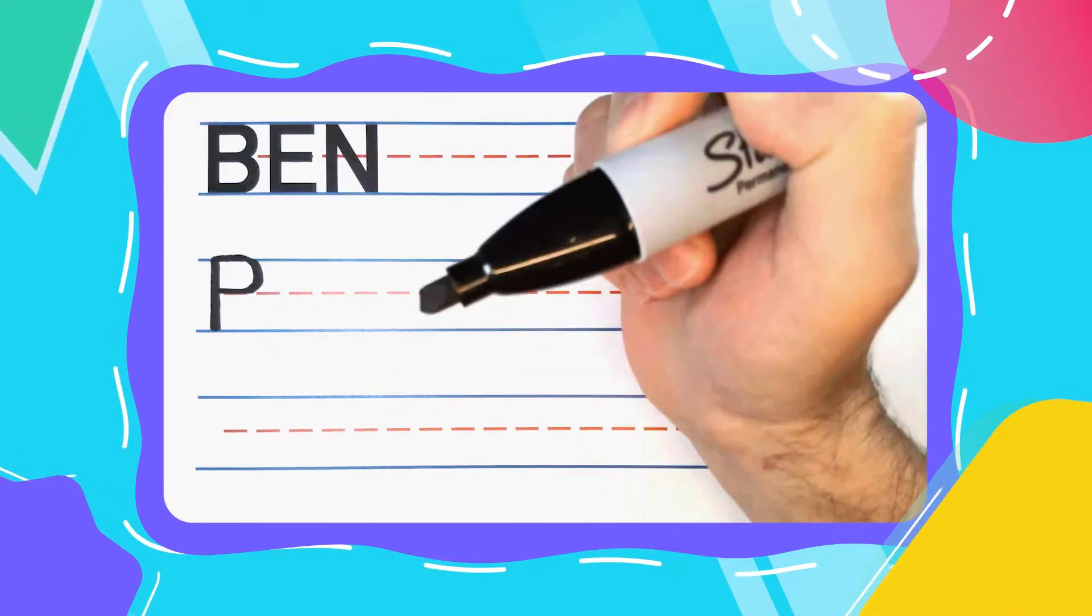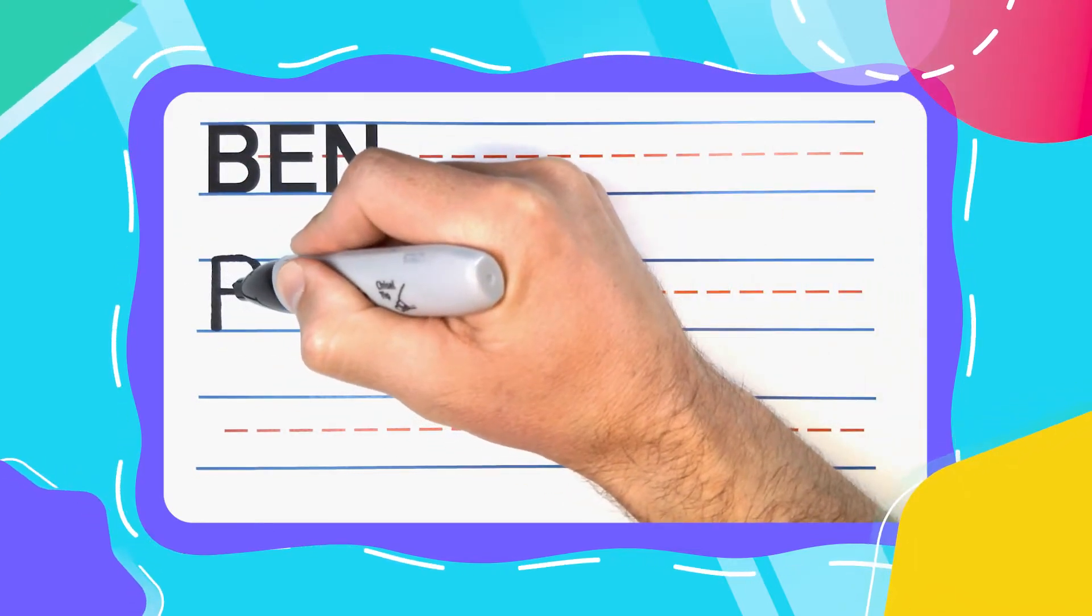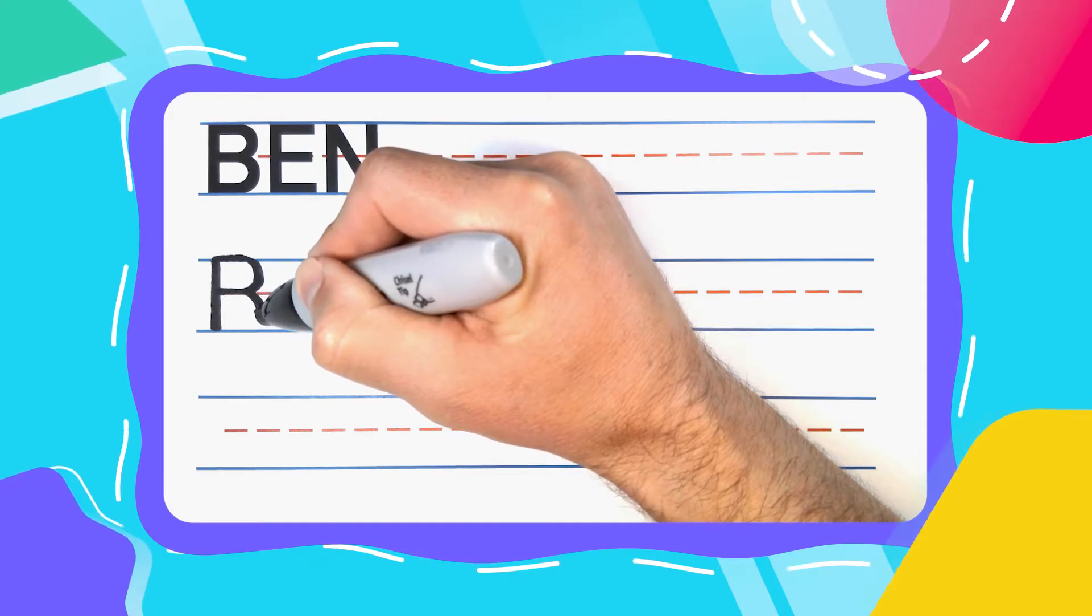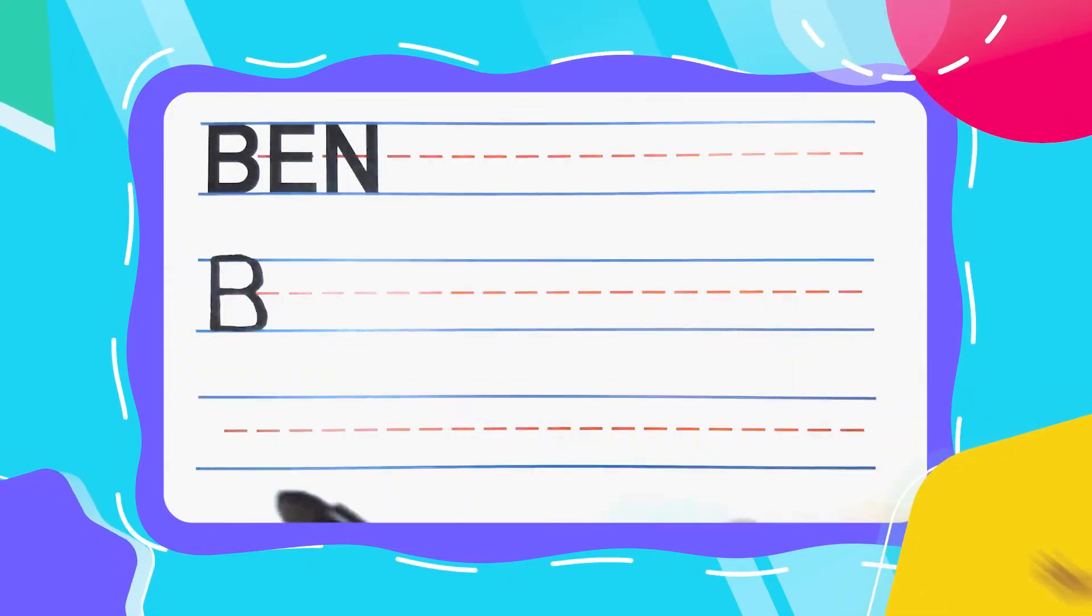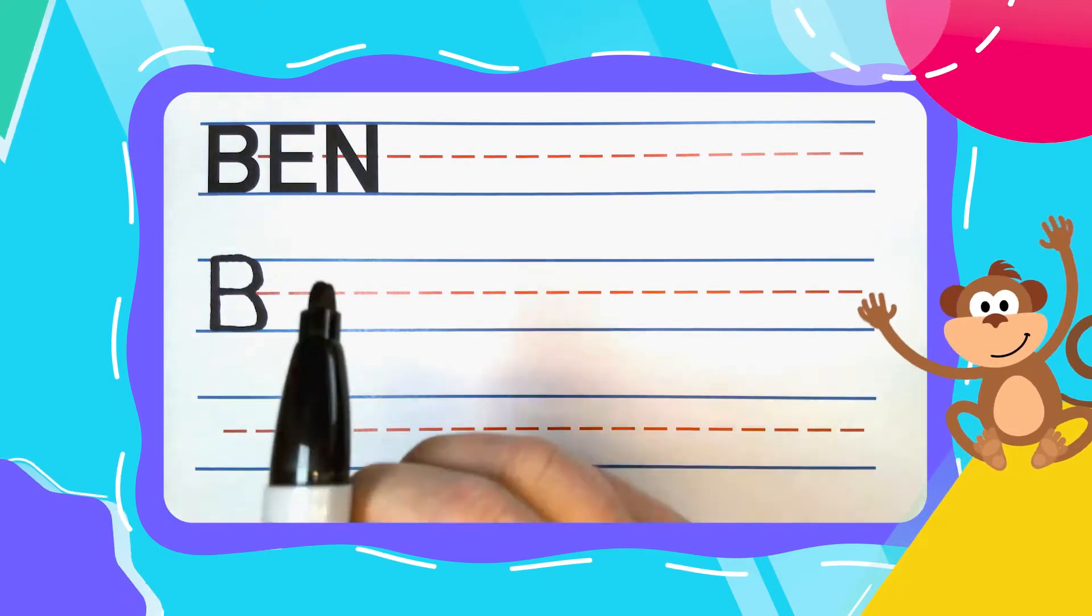come straight back to the left. Keep your pen there, bounce back out to the right curve again, and then when you hit the bottom, come straight back to the left. And you, my friends, have got a bouncing B!